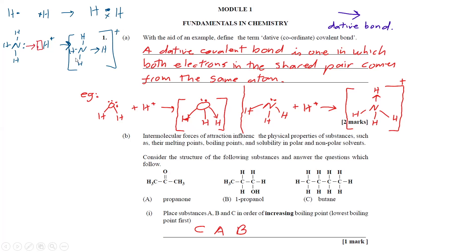In a dative covalent bond, the electrons in the bond come from one atom, not shared from two atoms. Here you can see that in H⁺ (the proton) its orbital is empty, so the lone pair on nitrogen will share with the H⁺, giving the entire molecule a positive charge.